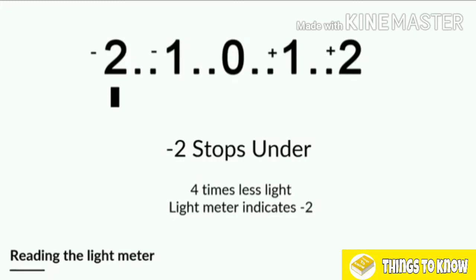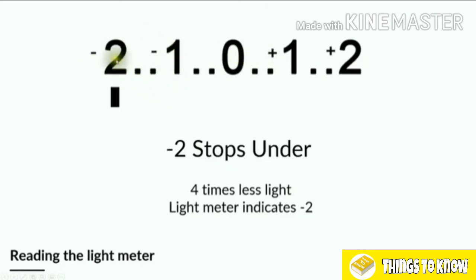Each of those numbers — minus 2, minus 1, 0, plus 1, plus 2 — represents a stop difference. We also have these little dots, sometimes appearing as lines, which are thirds of stops. We won't be speaking about those until the next module. We just want to understand full stops at the moment, so from minus 2 to minus 1 to 0 to plus 1 to plus 2, each is a stop in the difference.